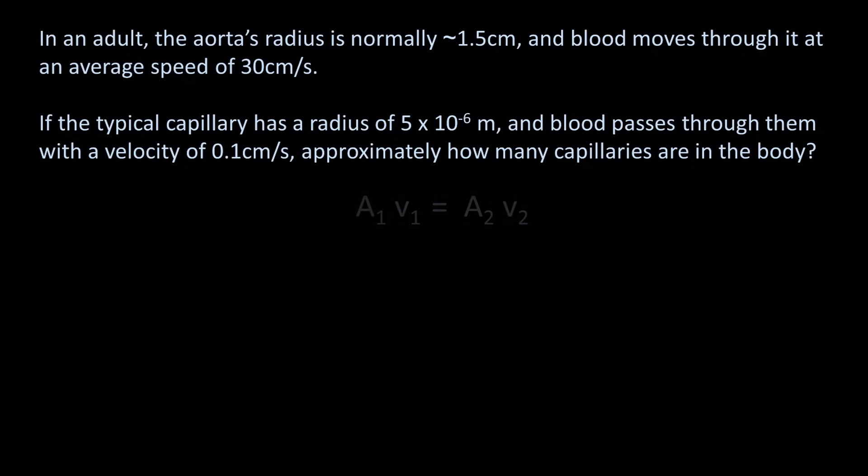Again, another continuity equation problem. In this case, area 1 is the cross-sectional area of the aorta, and velocity 1 is the average speed of blood in the aorta. But what is area 2? It is the total cross-sectional area of all capillaries, which is the cross-sectional area of one capillary times N, where N is the total number of capillaries.